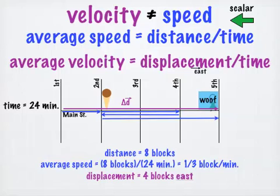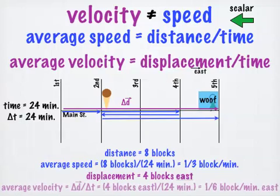We will call the time for the trip delta t. This is the time interval, or the change in time. My average velocity during the trip is the displacement divided by the time interval, which equals four blocks east divided by 24 minutes, which is one-sixth of a block per minute to the east.